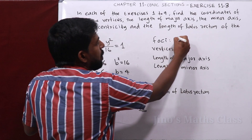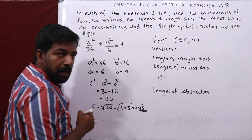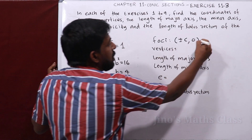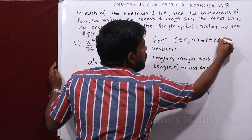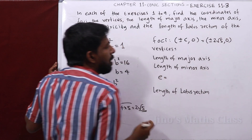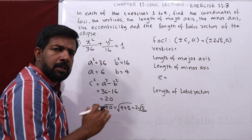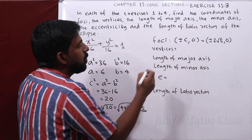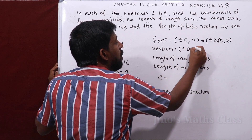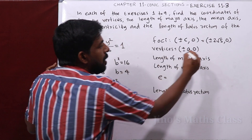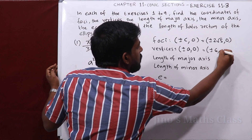The foci are at (±c, 0) = (±2√5, 0). The vertices are at (±a, 0) = (±6, 0).